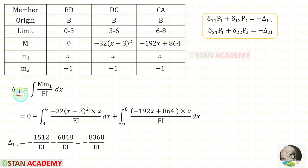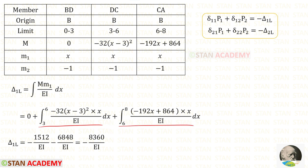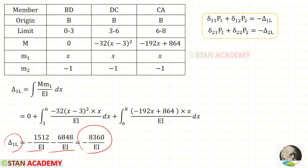Now let us find delta 1L using the formula: integration of M times M1 upon EI dx. For member BD, M is 0, so we directly enter 0. For DC, the limit is 3 to 6, and for CA, 6 to 8. Applying the values of M and M1 and using a calculator to perform the two integrations, then adding them, we get delta 1L = minus 8360 upon EI.